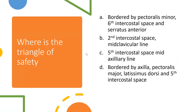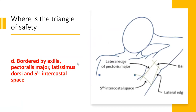MCQ: what is the correct triangle of safety for chest drain insertion? The answer is D — it's not actually a perfect triangle, which is a bit annoying, but that's the correct answer.